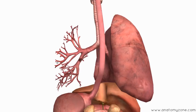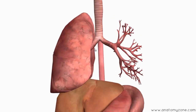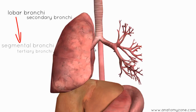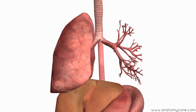Coming back to the bronchi — once they've entered the lung, they divide further. They divide into lobar bronchi, which are also known as secondary bronchi. The lobar bronchi then divide further into segmental bronchi. So you've got the trachea dividing into the primary bronchus — a right and left primary or main bronchus — then the primary bronchi divide into lobar bronchi (secondary bronchi), and the secondary bronchi divide into tertiary bronchi, which are the segmental bronchi.